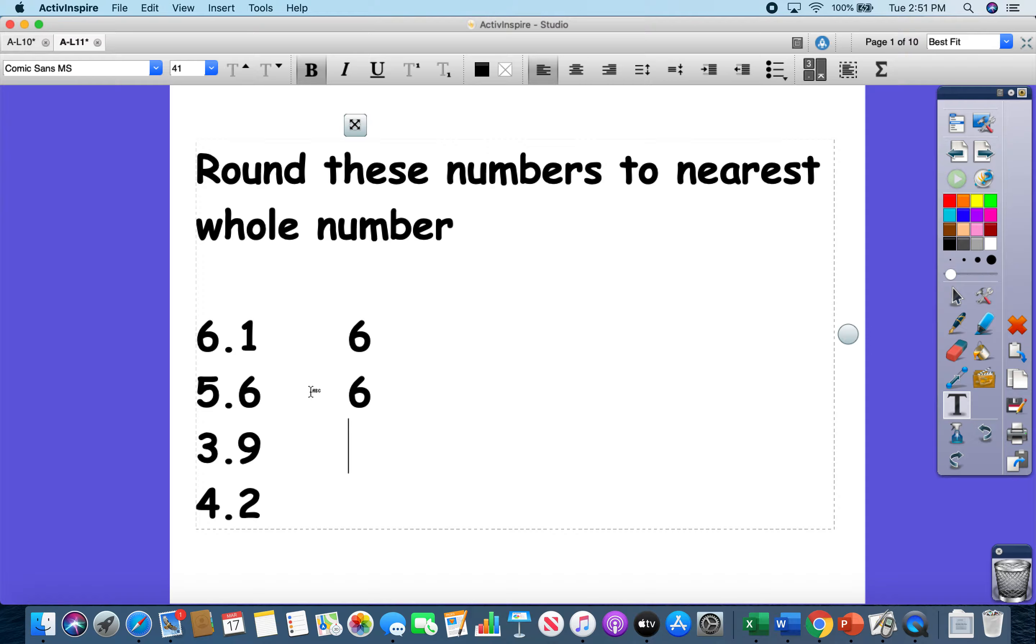3.9, look at the number to the right of the decimal, 9 rounds up, so that means that it's going to round to 4.